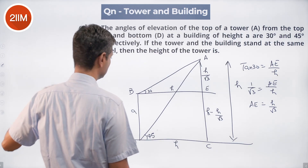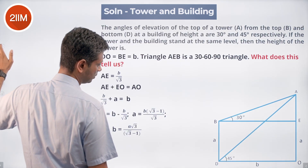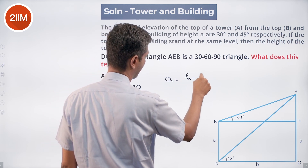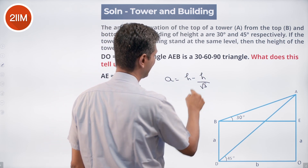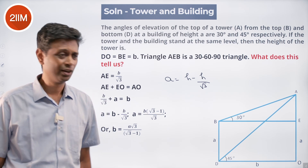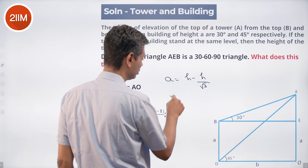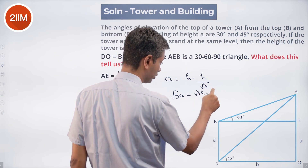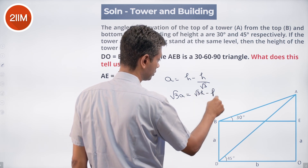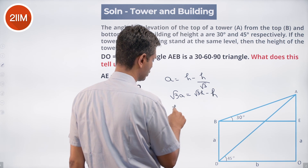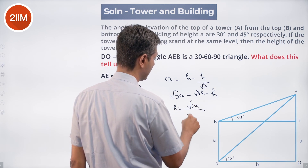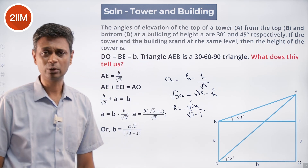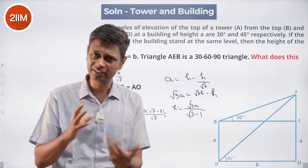Simplify that. We have a in terms of H; we need H in terms of a. Multiply both sides by √3: √3·a = √3·H minus H, so H equals √3·a divided by (√3 minus 1). Multiply and divide by (√3 plus 1) to rationalize the denominator.